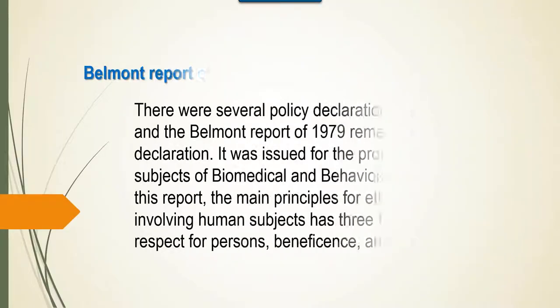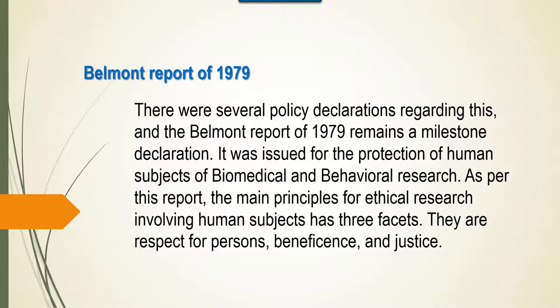There were several policy declarations regarding this and the Belmont Report of 1979 remains a milestone declaration. It was issued for the protection of human subjects of biomedical and behavioral research. As per this report, the main principles of ethical research involving human subjects has three facets. They are respect for persons, beneficence and justice.